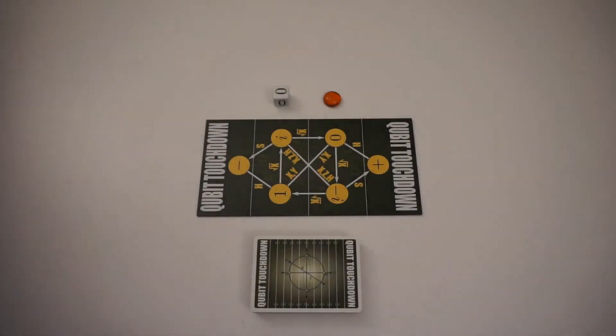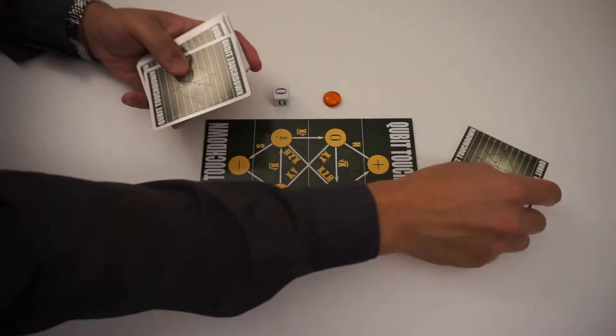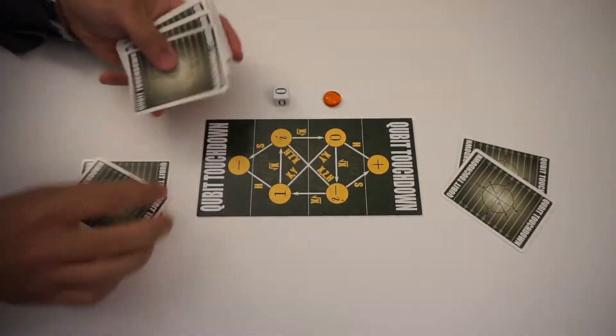Qubit Touchdown is a two-player game and the rules are similar to that of American football. So I've already shuffled all of the action cards and I'll give my opponent four and myself four.